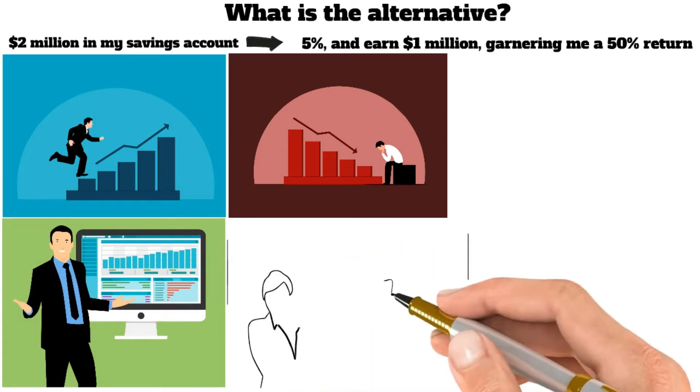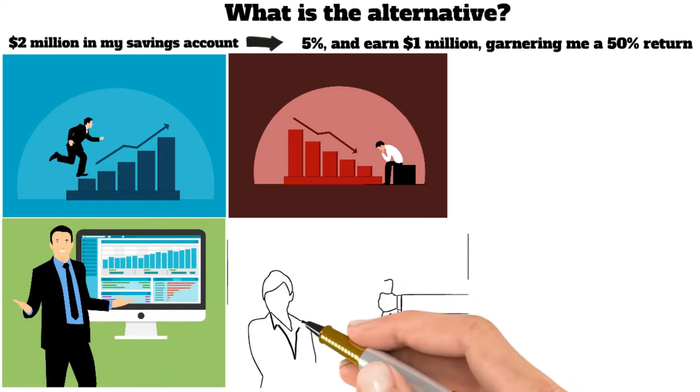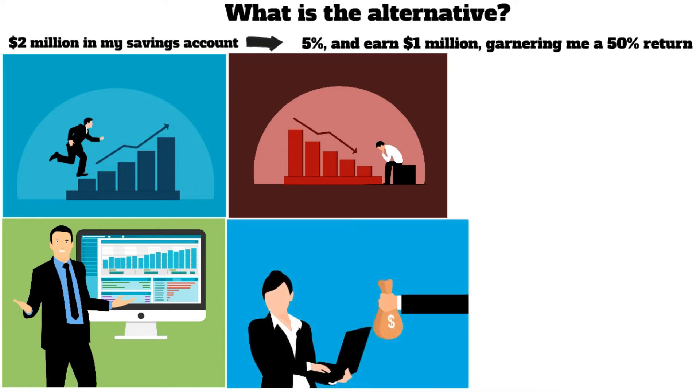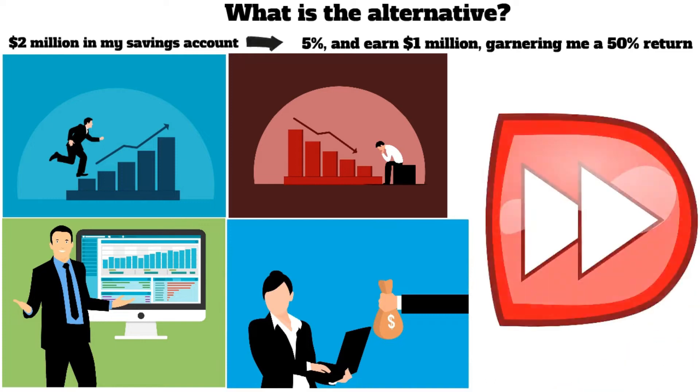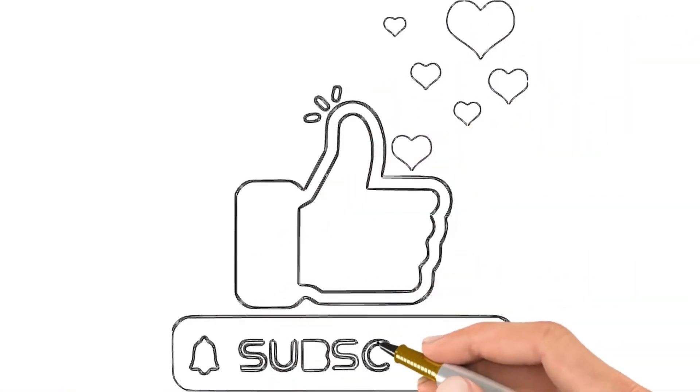This is an example of present value, time value of money, discounted cash flows, and opportunity costs offered for beginners. Before we proceed to the second reason why stocks are crashing, if you like this video, don't forget to like and subscribe to the channel.